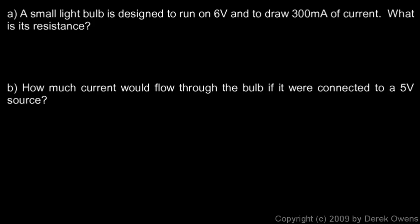Now let's take a look at a simple example problem that makes use of Ohm's law. Here we're told a small light bulb is designed to run on 6 volts and to draw 300 milliamps of current. And this terminology is the correct terminology. When you turn something on or you connect something to a voltage source, that allows or causes a certain amount of current to flow through it. So we say it draws that much current through the device. Or it draws that much current from the source. So in this case, we're given the voltage and the current, and we're told to find the resistance. So we'll use the equation in this form.